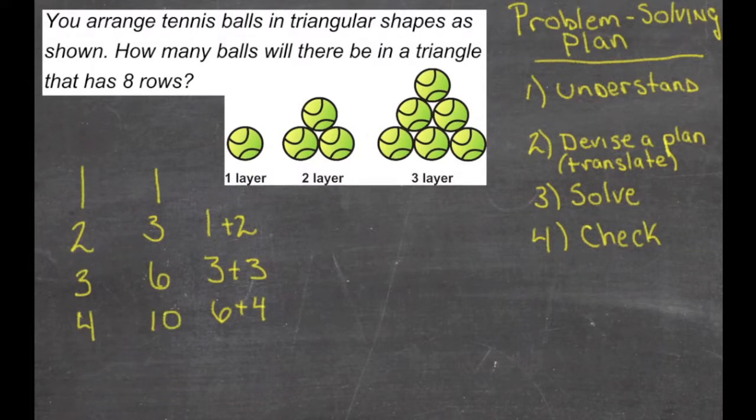So, now we have a plan that we can use. Because we can go on through and fill out the rest of this chart to figure out how many balls are going to be in the eighth row. So, that would be the third step. Let's continue on through.